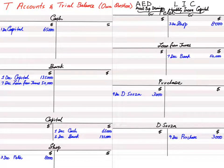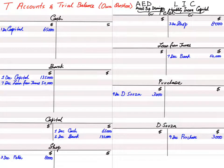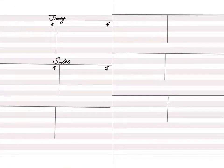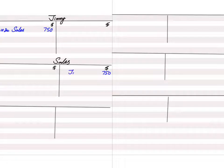Transaction 5: we sold $750 of goods to Jimmy, who promised to pay later. When goods are sold, a sales account is opened and always credited. Since Jimmy hasn't paid yet, Jimmy is a debtor — his account is debited. The entry is: debit Jimmy's account with reference 'sales,' and credit the sales account with reference 'Jimmy.' Remember, one account is opened once only — no duplicate accounts.